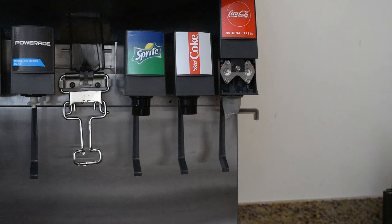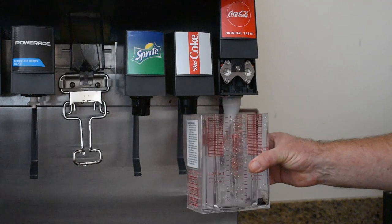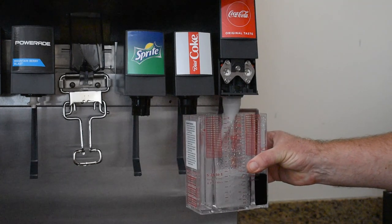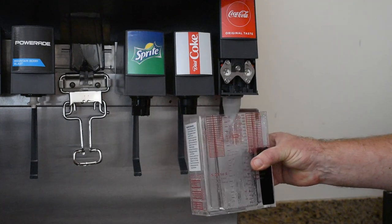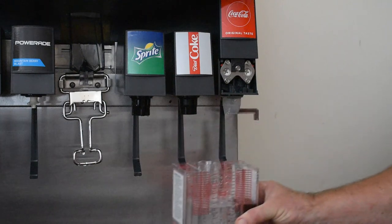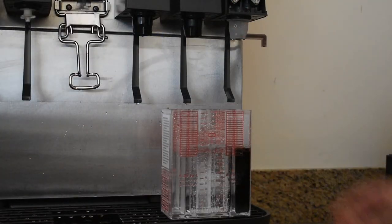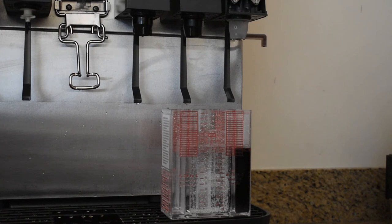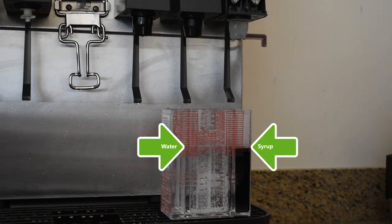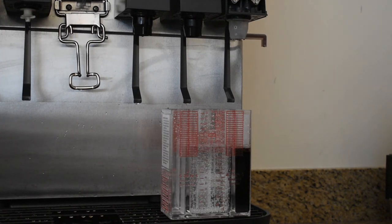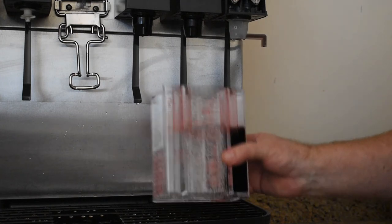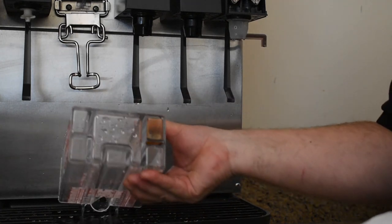Rinse the cup, then take another sample. If the water and syrup are level, the ratio is correct. If they are not, adjust as needed. Be sure to check the ratio after any adjustments.